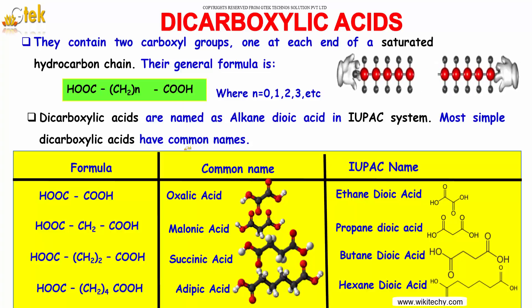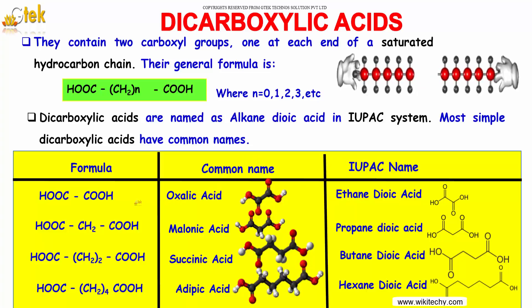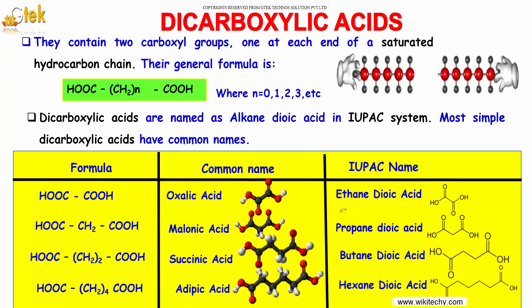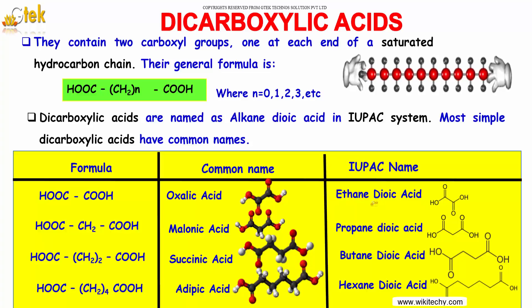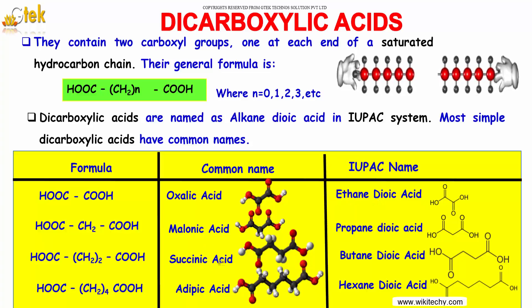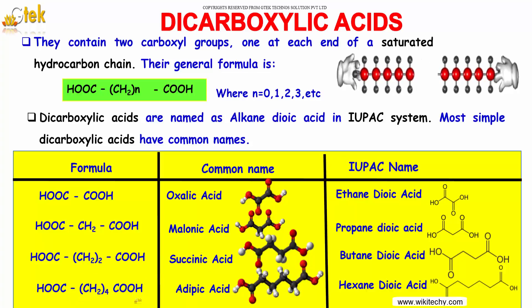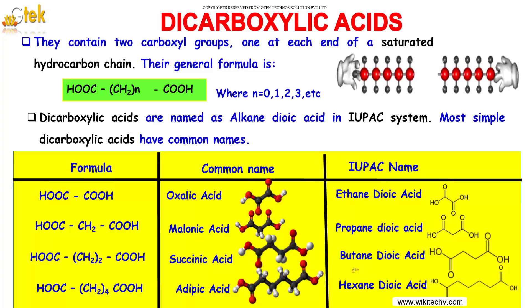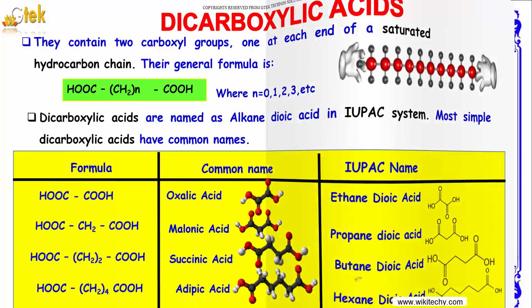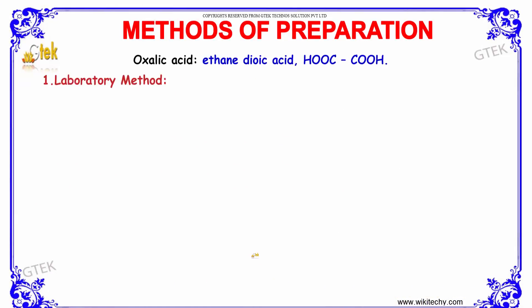Most simple dicarboxylic acids have common names. For example, COOH-COOH has a common name oxalic acid and IUPAC name ethanedioic acid, whereas the compound COOH-(CH₂)4-COOH has a common name adipic acid and IUPAC name hexanedioic acid.